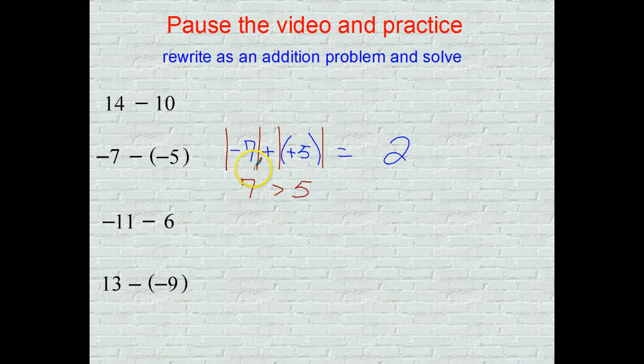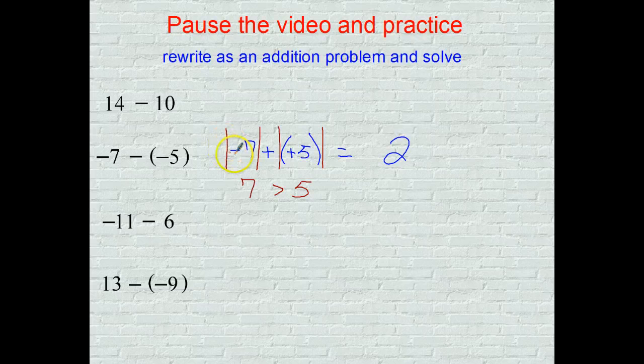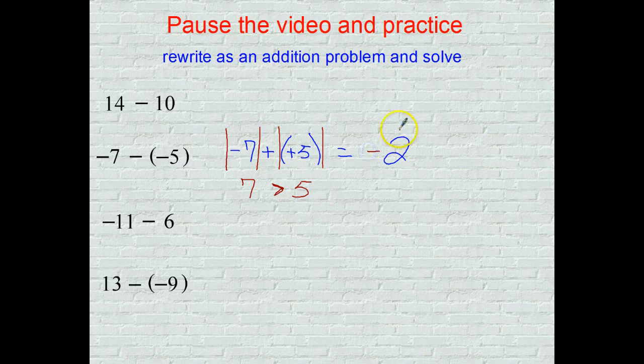Absolute value time. The answer would have to follow the original problem which had a negative with that 7 because the 7 won out, so the negative follows into the answer as negative 2.